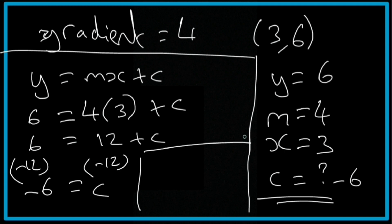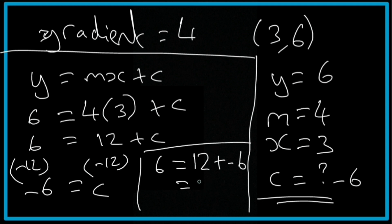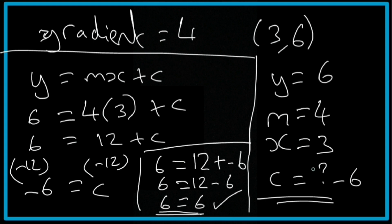Just to double check: y = 6 equals 12 + (-6). A positive and negative sign next to each other becomes a negative, so that's 12 - 6 = 6. As you can see it balances, so that's also correct.